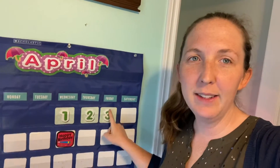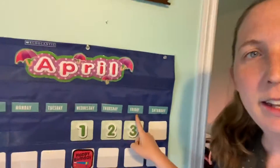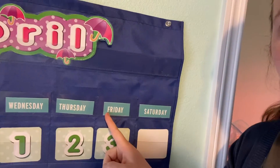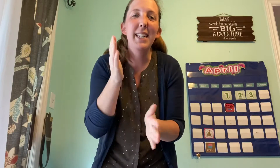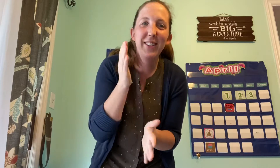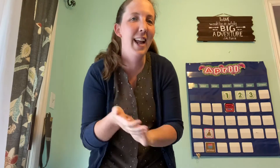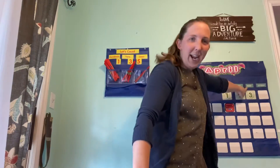If I point to the number three and slide up to the day of the week, it starts the letter F. F says F for Friday. Sunday, Monday, Tuesday, Wednesday, Thursday, Friday, then comes Saturday. Today is Friday.